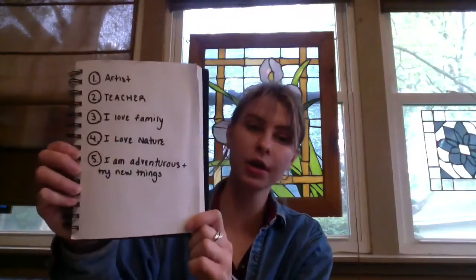So once I have my five character traits all written down, I am going to take my lighter piece of paper and I'm going to draw these out. And these can just be symbols or they can be really simple drawings — just a way to transfer what I wrote down into drawings on my light piece of paper.